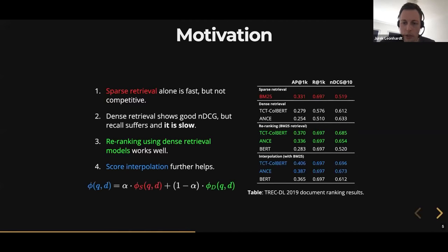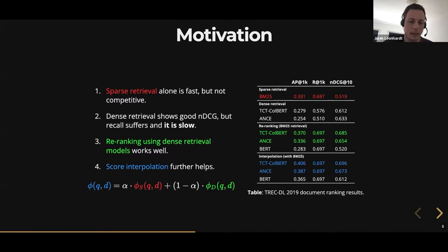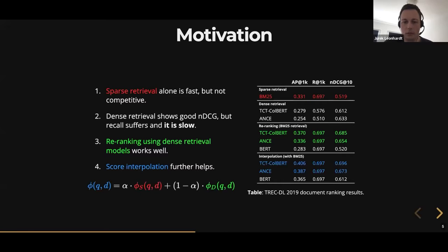Finally, we have interpolation-based re-ranking, which is pretty much the same as the other re-ranking. The only difference is that instead of discarding the sparse score phi s, we keep it and compute the final ranking phi — shown in blue — as a linear interpolation of the sparse score phi s and the dense or semantic re-ranking score phi d. As you can see, you get a little bit better results with this.